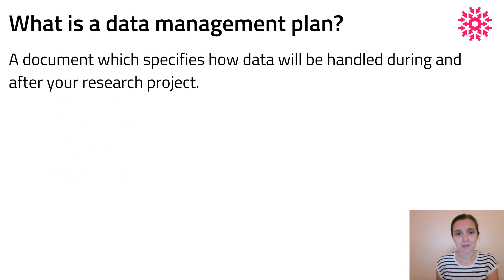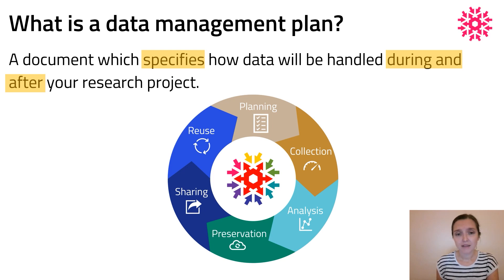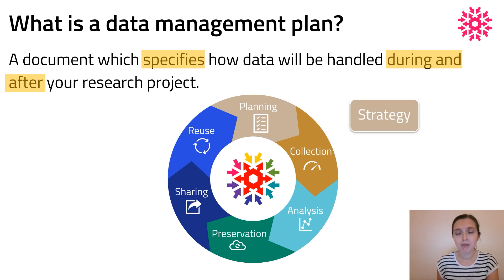What is a data management plan? It's a document — we don't specify the format — which specifies how data will be handled during and after a research project. The key words here are 'specifies' and 'during and after'. We've already seen the data life cycle. The data management plan needs to cover all stages of it. The management plan itself belongs to the planning stage, but it should account for what happens to the data in every stage of this cycle. It should include your strategy for how you want to deal with data, both the practicalities and any motivation you might have for that.